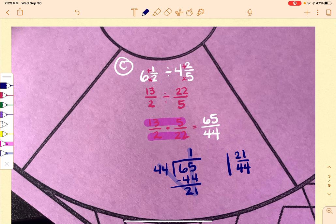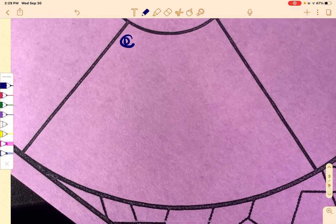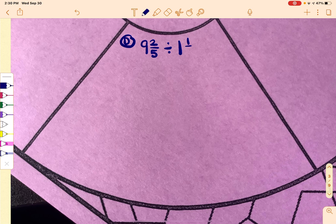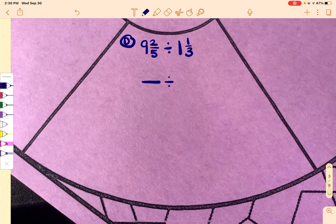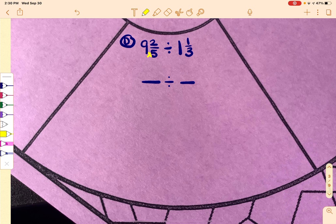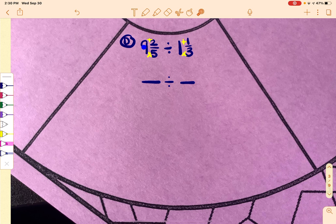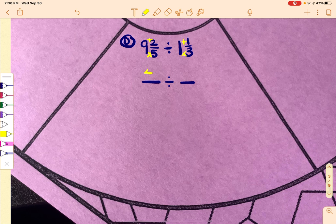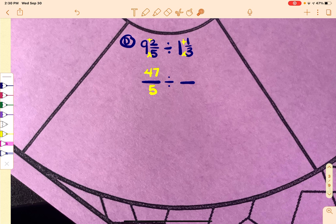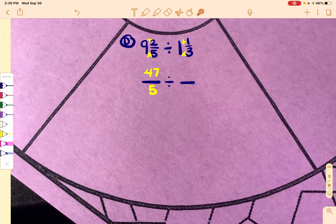Okay, now we're going to go to D. So for D, I have 9 and 2 fifths divided by 1 and 1 third. Now remember, we want it to be a fraction divided by a fraction, and this really isn't set up in that way. So I'm going to have to go through and change it from being a mixed number to being improper. So if I do this, 9 times 5 is 45, plus the 2 on top is 47, so 47 over 5. On this one, 3 times 1 is 3, plus 1 is 4. So it's 4 over 3.